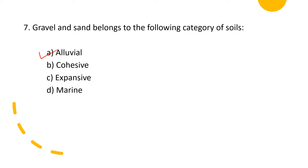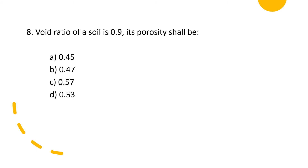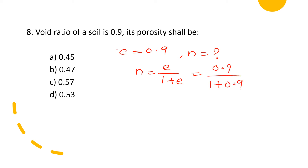Eighth question: void ratio of a soil is 0.9; find its porosity. Options are 0.45, 0.47, 0.57, and 0.53 — all very close, so be careful. Using n = e / (1 + e): n = 0.9 / (1 + 0.9) = 0.9 / 1.9 ≈ 0.47. The answer is option B. Note that options A and B differ by only 0.02, so solve carefully.